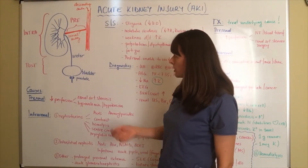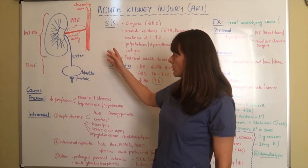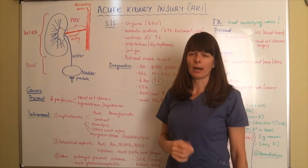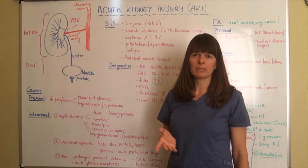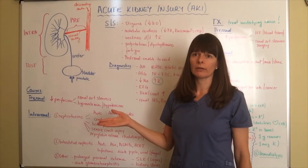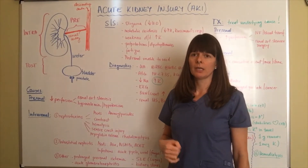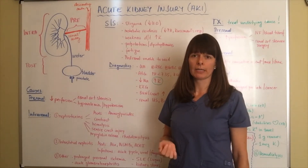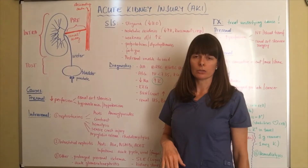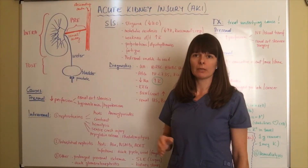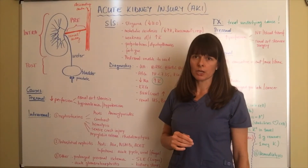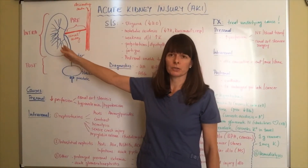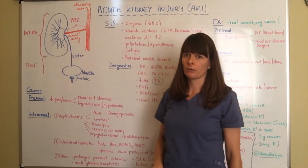Another cause for low perfusion is hypovolemia — low blood volume due to whatever causes there might be: it might be dehydration, heat exhaustion, or a traumatic injury with a lot of blood loss. Whenever there's hypovolemia and therefore hypotension, the renal artery does not supply enough blood to the kidneys and therefore causes renal failure.